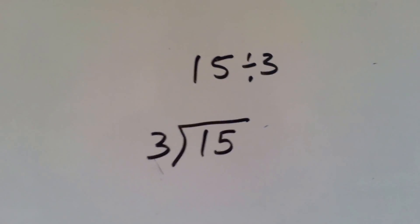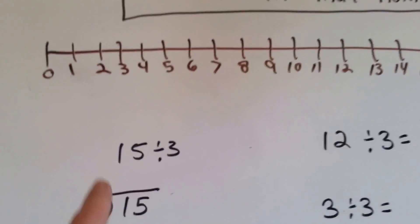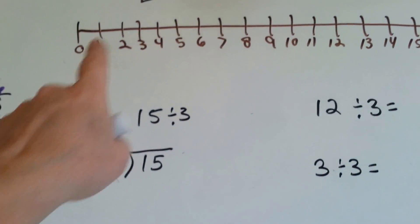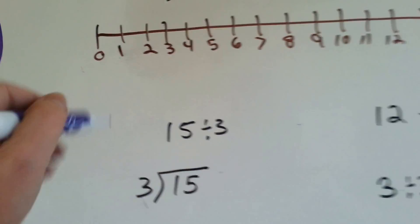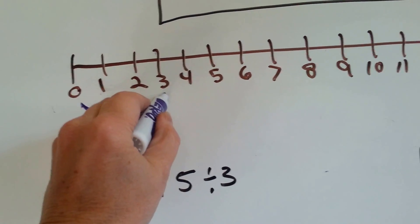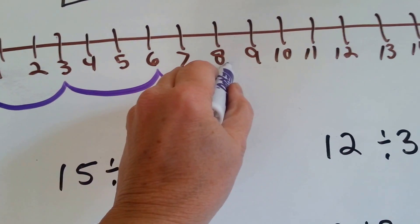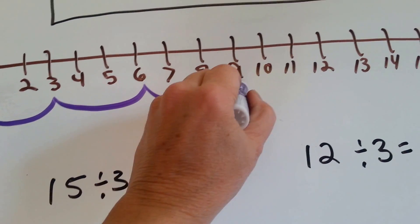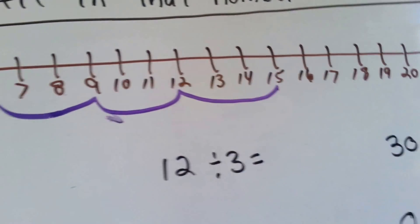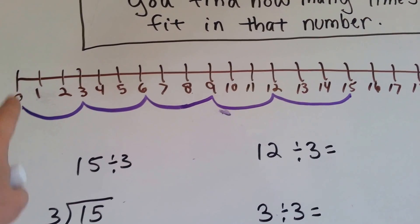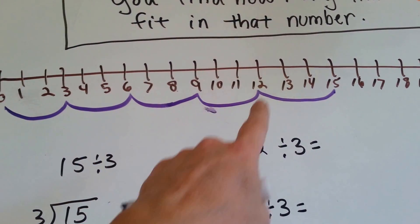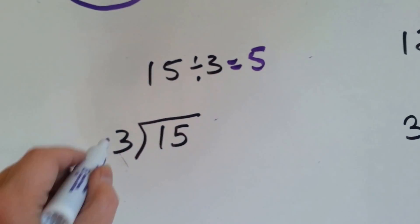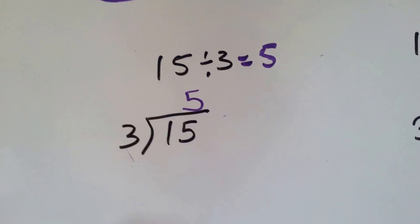How about 15 divided by 3? Let's use our number line. We're going to jump by 3's until we get to 15. Ready? 1, 2, 3. 1, 2, 3. 1, 2, 3. 1, 2, 3. 1, 2, 3. How many times did we do a jump? 1, 2, 3, 4, 5. So 15 divided by 3 equals 5. 3 goes into 15 five times.